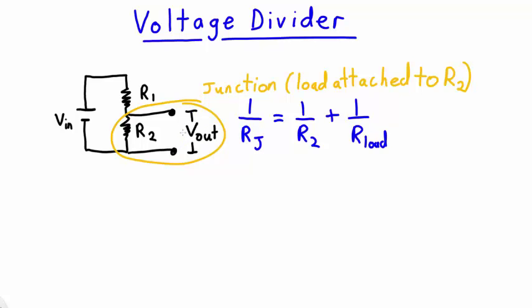To calculate the voltage across this junction, we assume that the load has an extremely high resistance. This means that 1 over R load is very small, approximately 0. Therefore, 1 over the resistance of the junction equals 1 over R2, so the resistance of the junction equals R2.